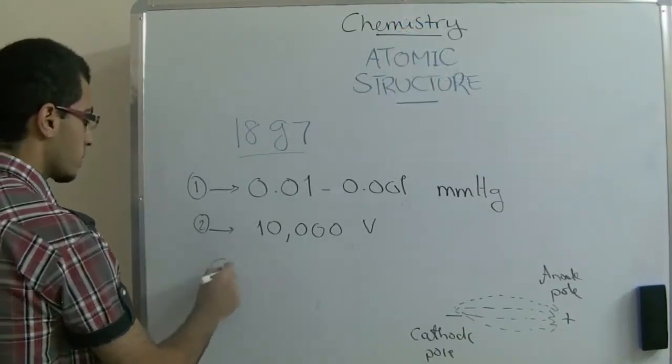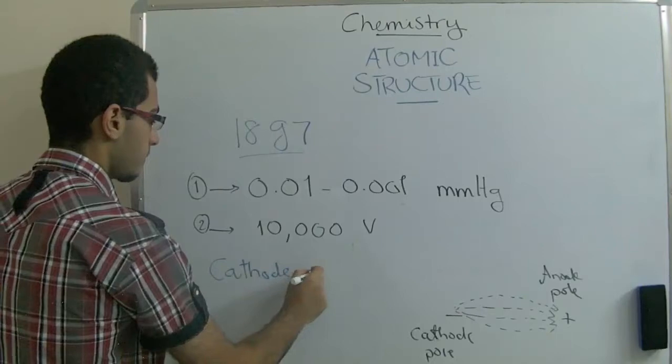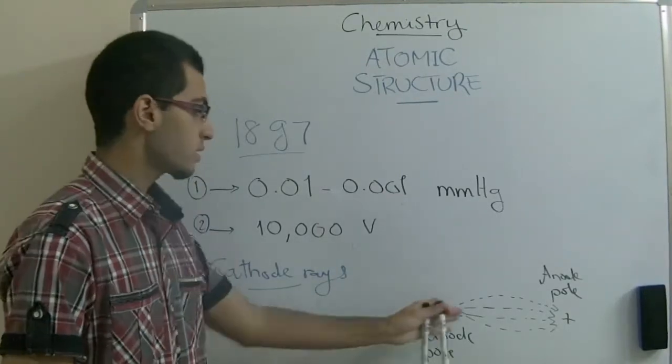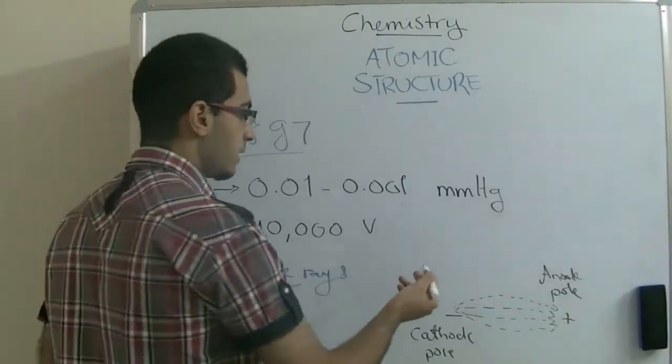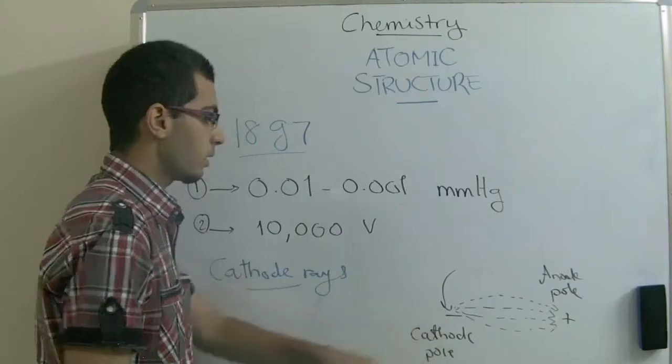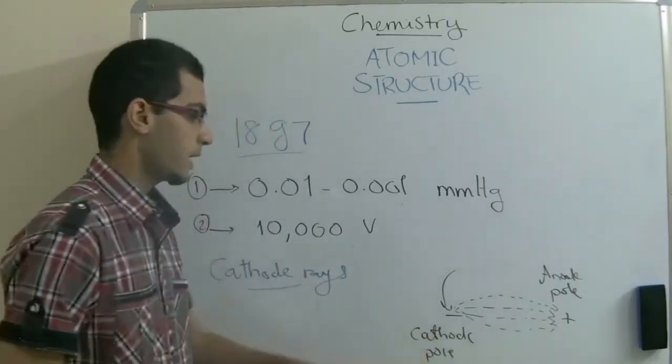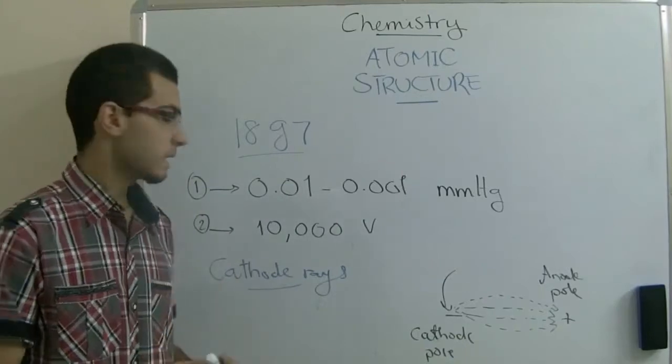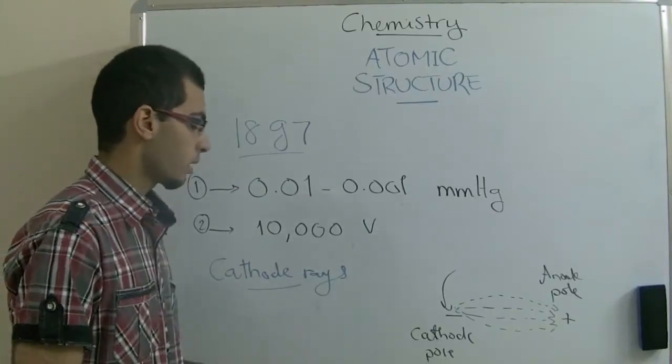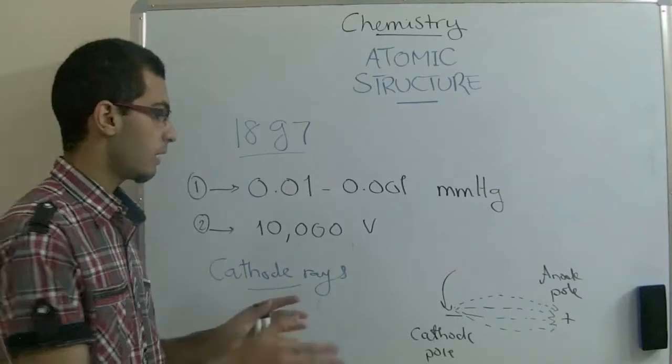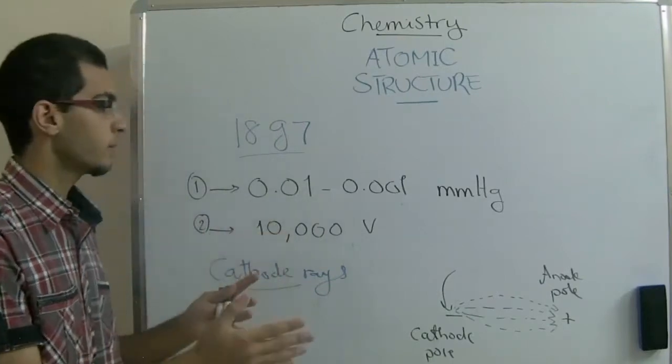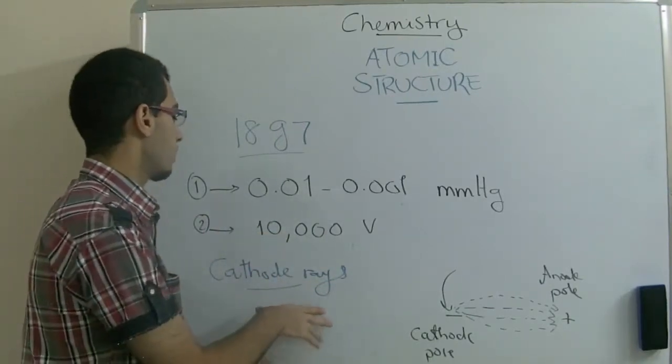The cathode rays were produced in this experiment whatever the type of gas were used or whatever the material from which the cathode pole was manufactured. This was great evidence that the cathode rays are fundamental in any matter. This is the point here. We are searching for the fundamental material of the matter.